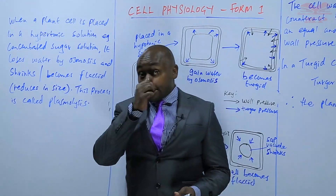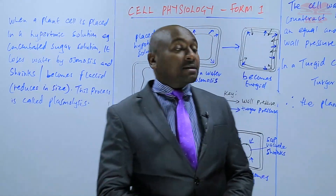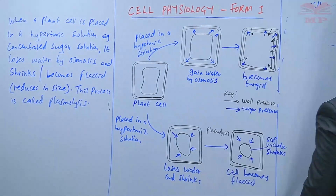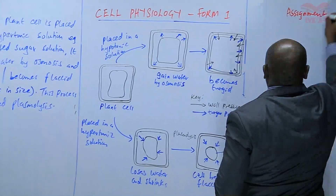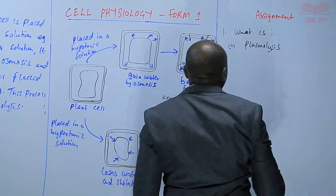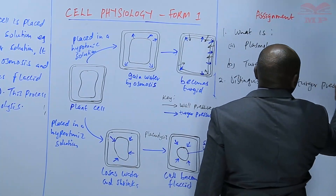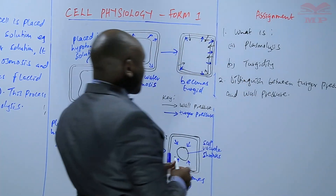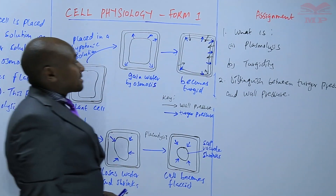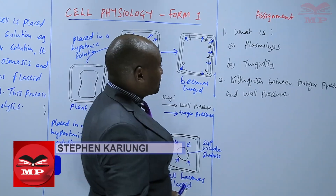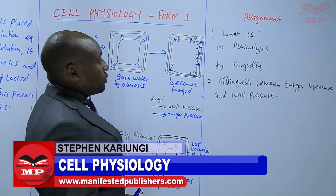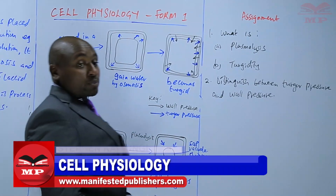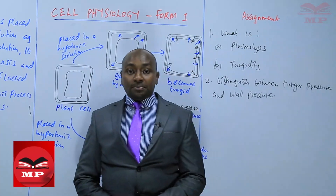That is the end of water relations in plant cells. We will have an assignment on the same. The first question: what is plasmolysis and turgidity? And two, distinguish between turgor pressure and wall pressure as we have explained. We will stop there for today and continue next time. Goodbye.